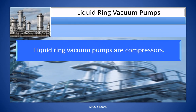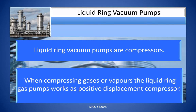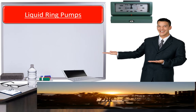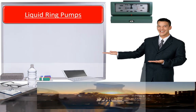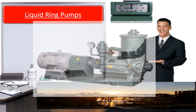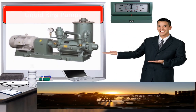Liquid ring vacuum pumps are compressors. When compressing gases or vapors, the liquid ring gas pumps work as positive displacement compressors. Shown here are pictures of a single-stage liquid ring vacuum pump and a two-stage liquid ring vacuum pump.